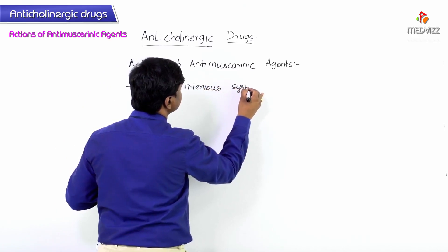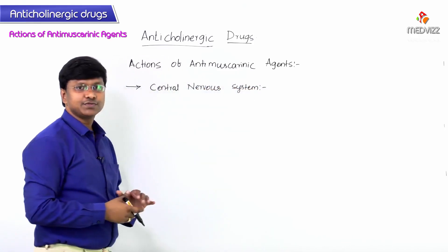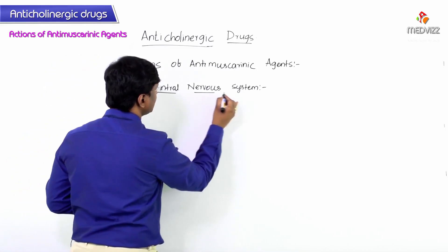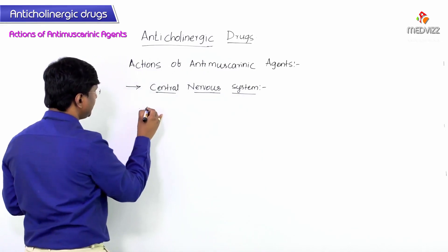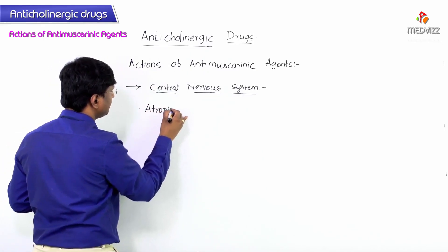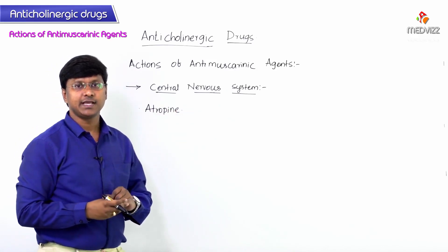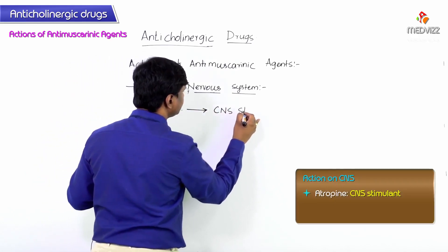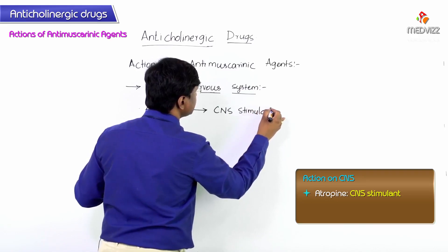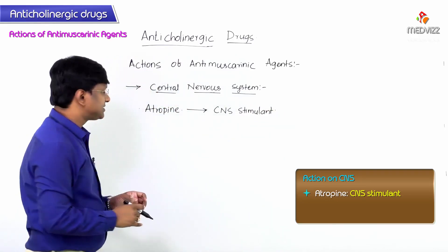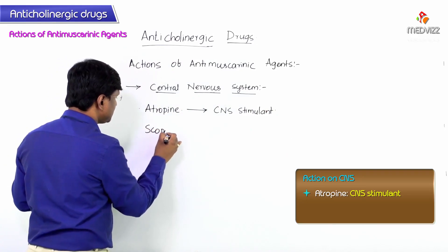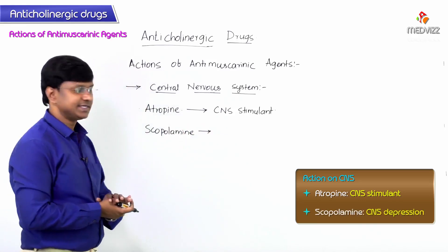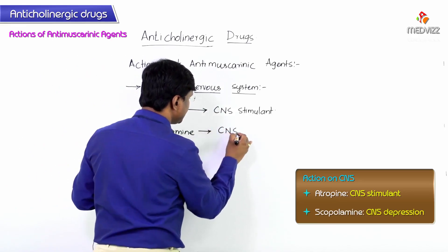Regarding the action on the central nervous system: atropine is a CNS stimulant. Scopolamine, on the other hand, suppresses the CNS — it causes CNS depression.